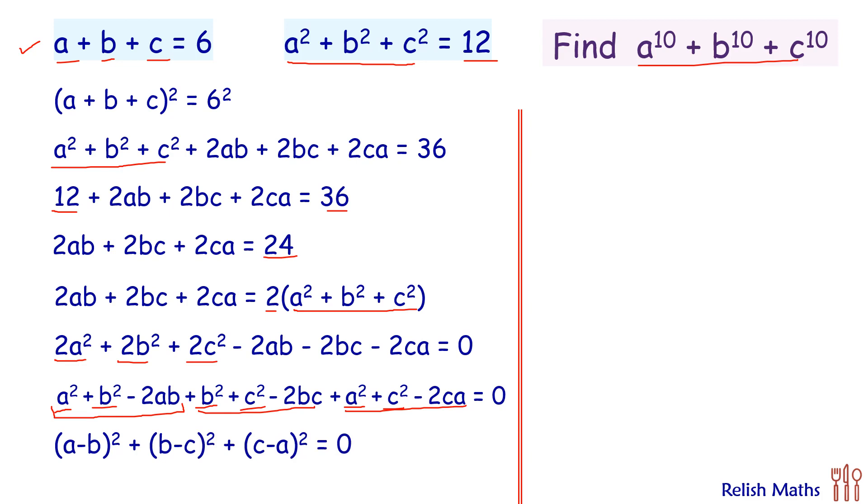Now this is sum of three perfect squares. A perfect square cannot be negative. Its minimum value is 0, so its sum can be 0 if and only if the individual term is 0, and individual term can be 0 if a equals b.